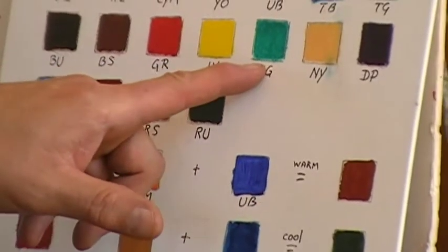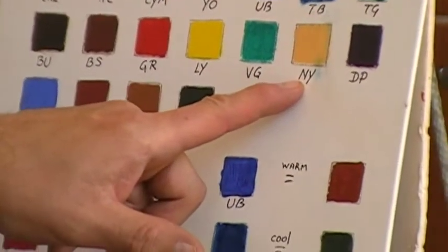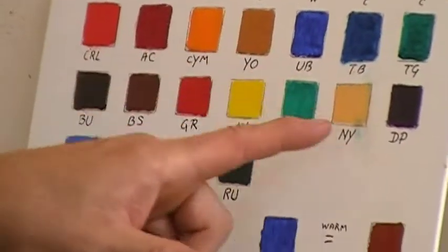...this is viridian green, very similar to phthalo green. Naples yellow which is a lead based yellow I very rarely use, you can see you can actually mix that with a little white from yellow ochre.